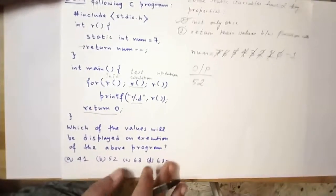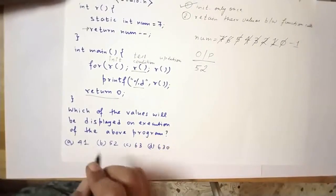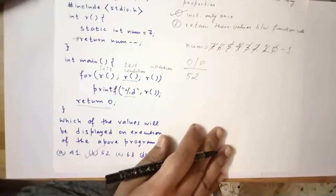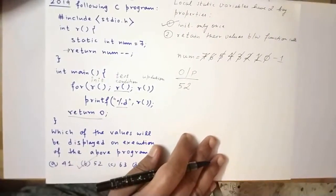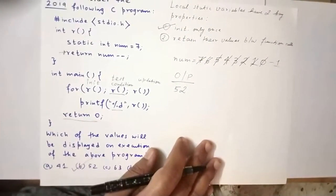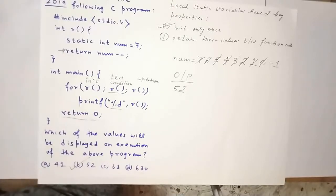So out of the four options given to us, the correct answer is 52, option B. If you are able to understand it in the first go, very good. Otherwise you can rewind and play the video again. If you are still unable to understand, leave a comment below and I will try to help you out. I hope this helps.